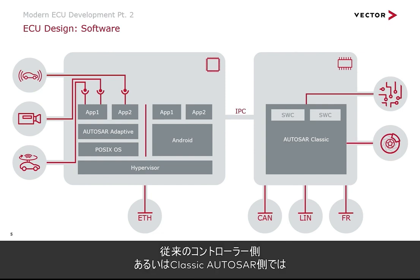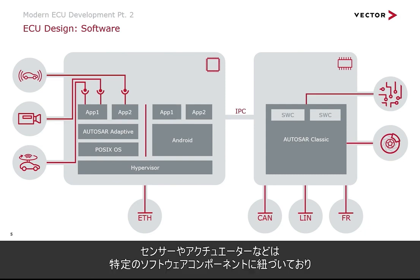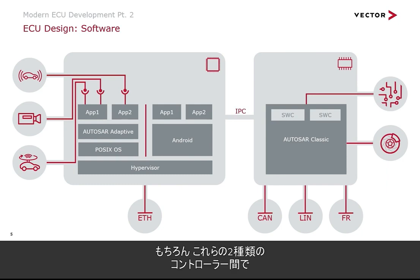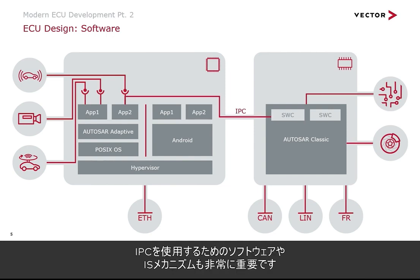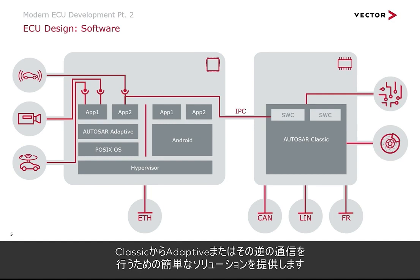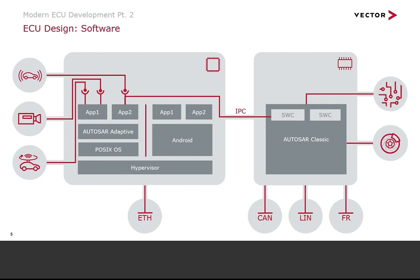On the Classic AUTOSAR side, peripherals are really hardwired to specific software components and this area is not that dynamic. And of course, it's very important to also have a mechanism for IPC between the two types of controllers. With our VIPC technology, we provide an easy solution to communicate from Classic to Adaptive AUTOSAR or vice versa. Although this architecture appears fairly simple at first glance, it has a couple of pitfalls I would like to examine now.